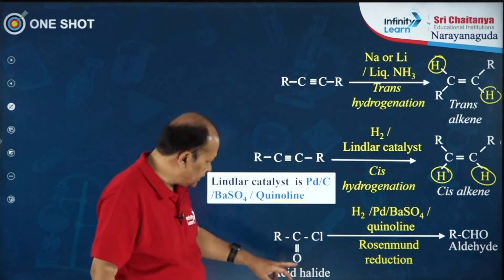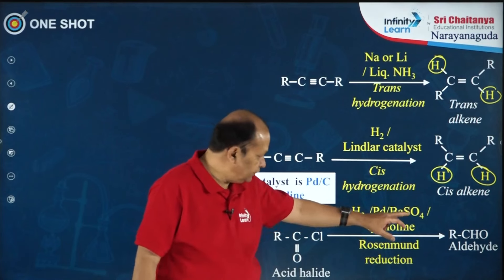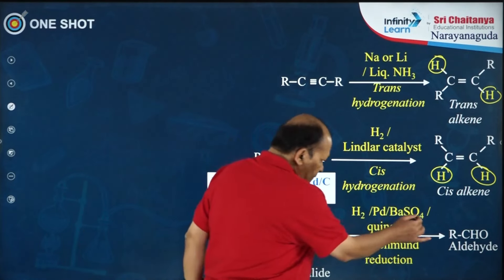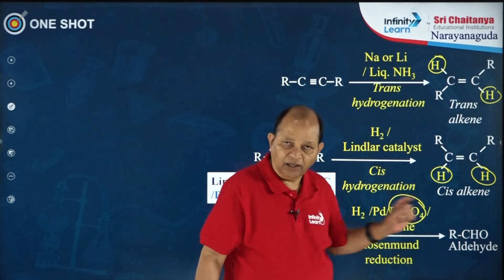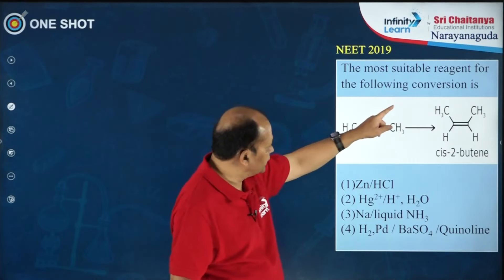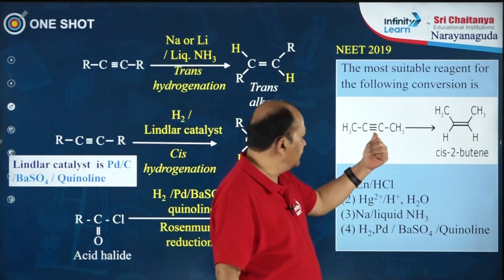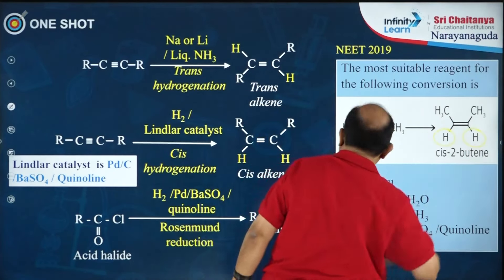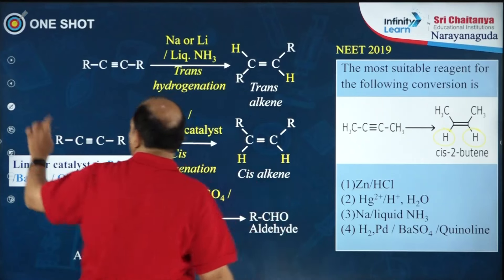Another hydrogenation reaction: acid chlorides react with hydrogen catalyzed by palladium in the presence of barium sulphate in quinoline to give aldehyde — this is called Rosenmund reduction. Barium sulphate prevents further reduction of aldehyde to primary alcohol. A question from NEET 2019: the most suitable reagent for converting butyne to cis-2-butene is hydrogen, palladium, barium sulphate, and quinoline — the answer is option 4.